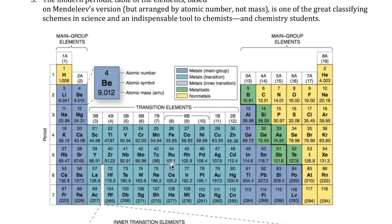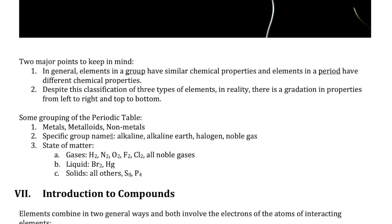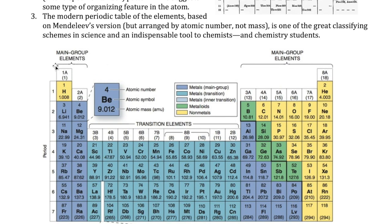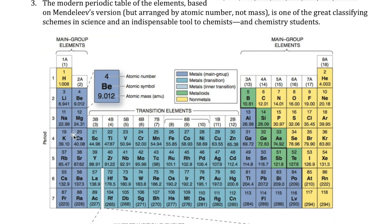The groups are the columns and the periods are the rows of the periodic table. Some groups have special names. Groups are divided into main group elements and transition group elements. The main group elements are the first two columns and the last six columns; the ten columns in the middle are the transition elements. Main group elements are much more predictable compared to transition elements. Group 1A is called the alkali metals, group 2A is the alkaline earth metals, 7A is called halogens, and 8A is called noble gases.